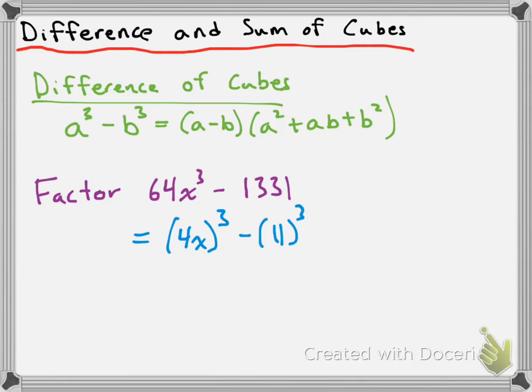So now this is clearly a difference of cubes. I've got something cubed minus something cubed. And if you want to compare this to our formula, that would mean that 4x is our a, and then 11 is our b. So now we just have to apply the formula to this.